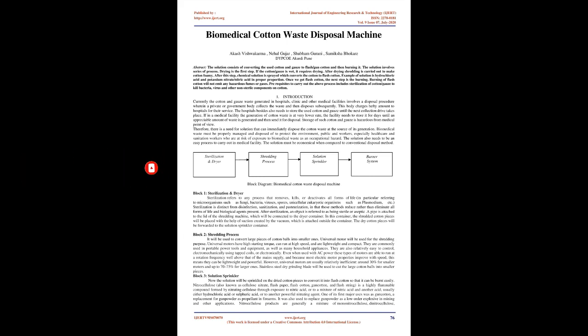The solution involves a series of processes. Drying is the first step. If the cotton or gauze is wet, it requires drying. After drying, shredding is carried out to make cotton foamy. After this step, chemical solution is sprayed which converts the cotton to flash cotton.